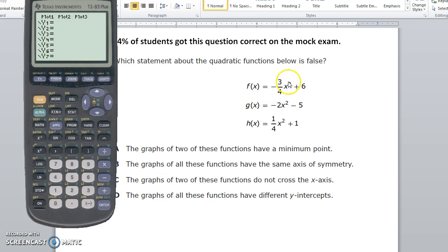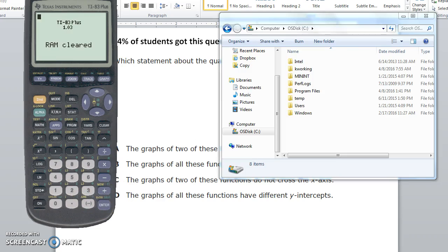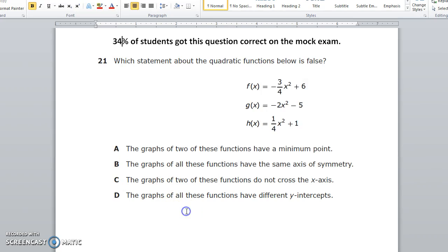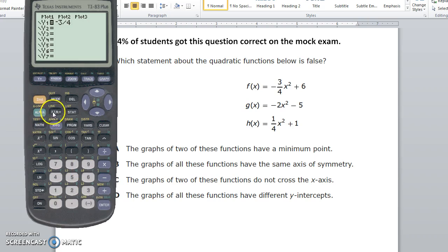Negative three-fourths x squared plus six. Okay, here we go. Negative three-fourths x squared plus six. That's the first equation.